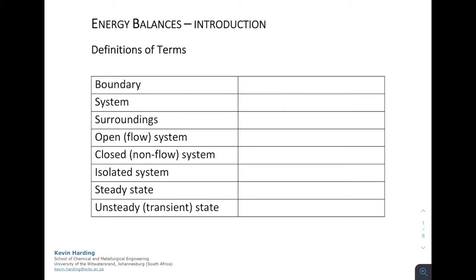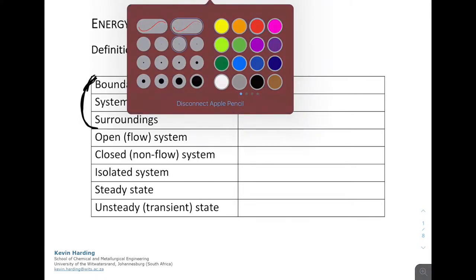The first of these terms are in this table here. The first one is boundary, the next one is system, and the third one is surroundings. I'd like to group those three in our first set of definitions.